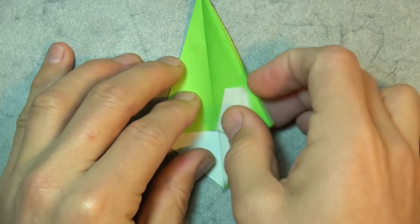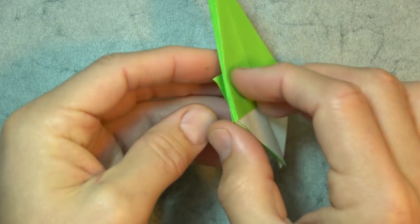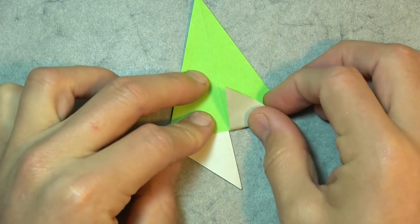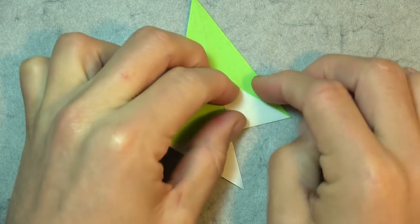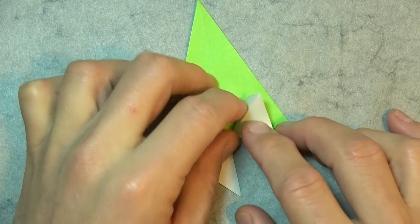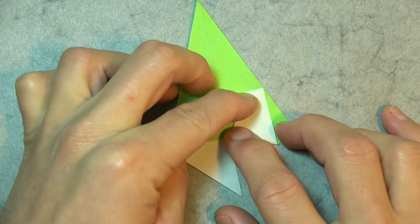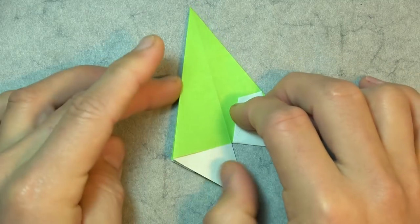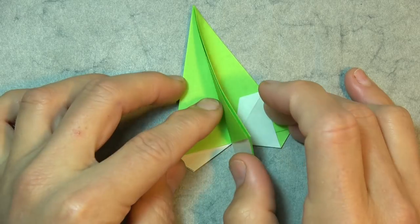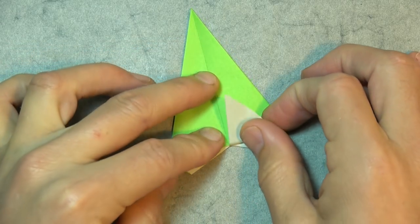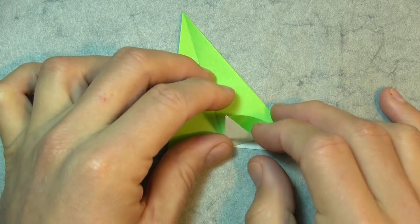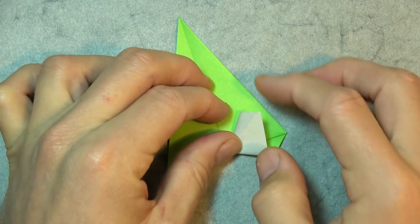Okay, and turn over, and fold this flap up. And open it, and squash it so the corner touches the edge. And fold these two flaps over. And one more flap. Fold it up. And squash it so the corner touches the edge.